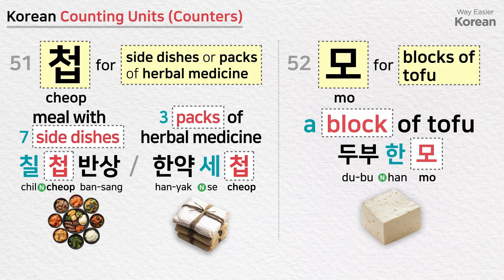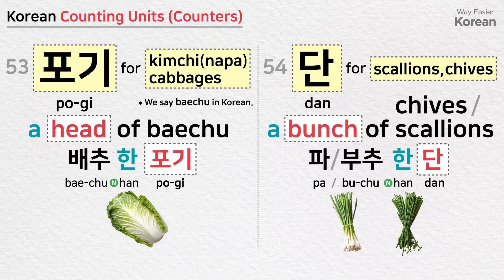접 is a counting unit for side dishes or packs of herbal medicine: a meal with seven side dishes — 칠 첩 반상; three packs of herbal medicine — 한약 세 첩. 모 is a counting unit for blocks of tofu: a block of tofu — 두부 한 모. 포기 is a counting unit for kimchi cabbages (Napa cabbages — 배추): ahead of Napa cabbage — 배추 한 포기.